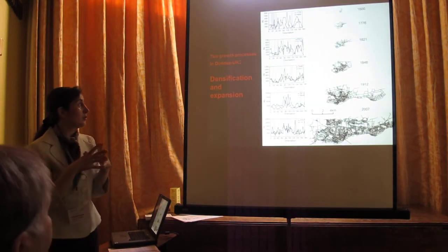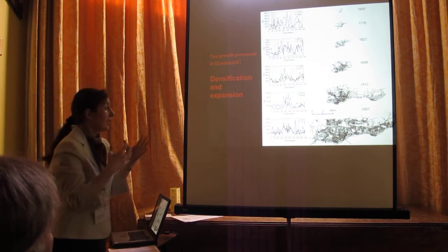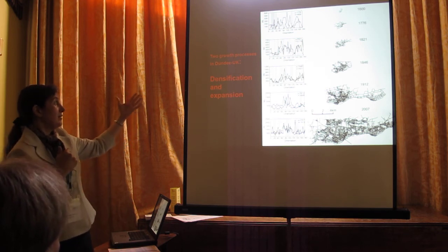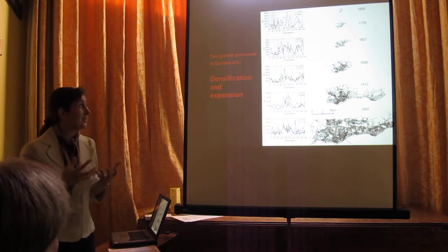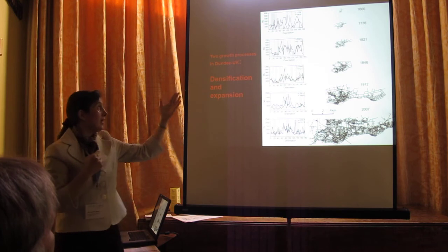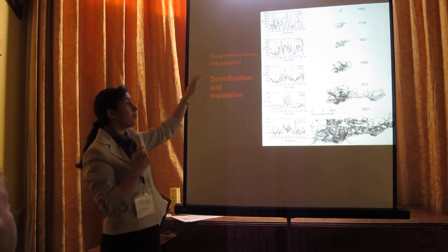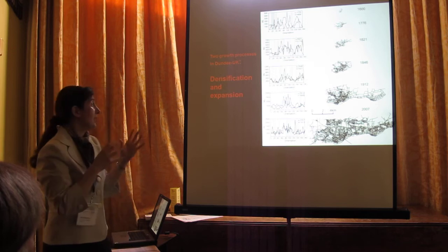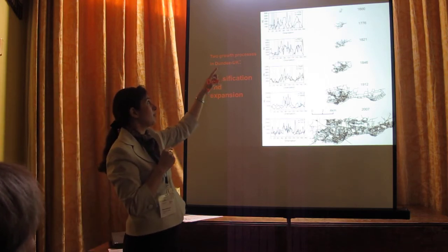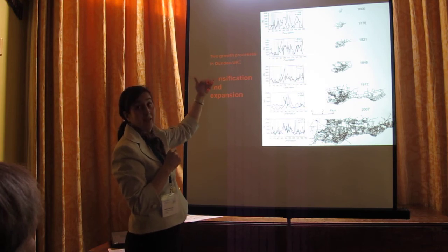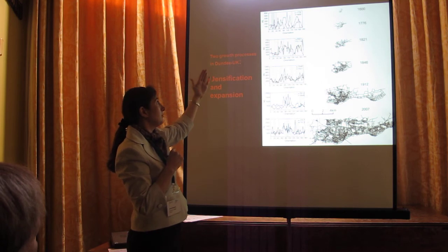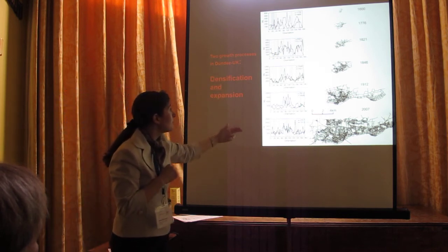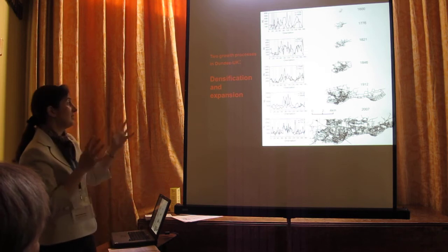Street networks do not evolve just through expansion — other processes are also involved. I was able to identify two network growth processes: densification and expansion. Plotting maximum street length against orientation, the grey part shows densification and the white part shows expansion. When the more recent graph is higher than the earlier one, we have expansion; if lower, we have densification. In all time periods, both processes — densification and expansion — are present.